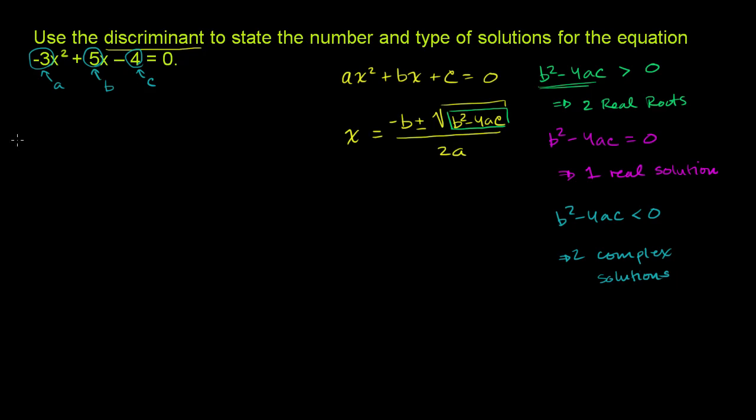And so we can evaluate the discriminant. b is 5, so b² is 5², minus 4 times a, which is -3, times c, which is -4. I have to be careful. c is this whole thing. c is -4. We have to make sure we take the sign into consideration. So times c, which is -4 over here.